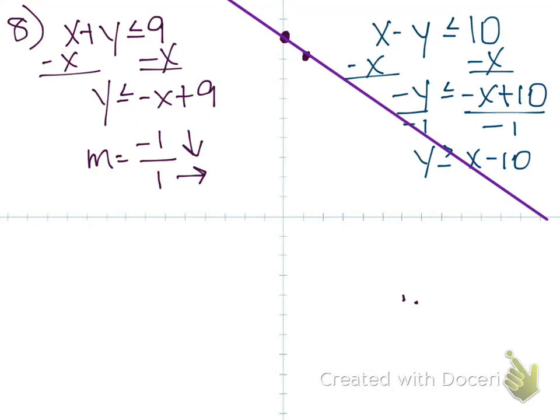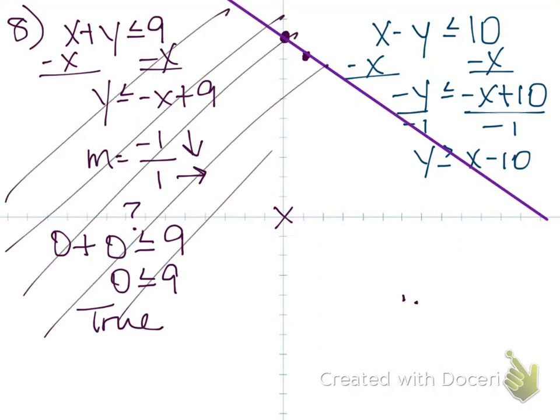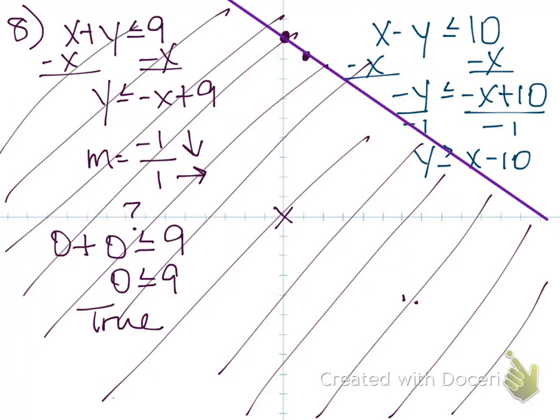And let's go ahead and do the shading while we're here. And again, I like to test my point 0, 0. It's the easiest one to test. If I plug in 0, 0 into my original inequality, is it true or false? True. It is true. So what that tells me is 0, 0 is on the true side. And so all of that gets shaded. Remember, in my math lab, you get to use that little paint bucket.